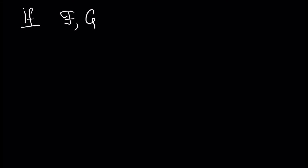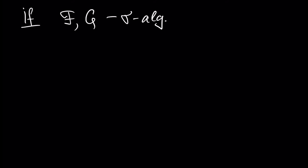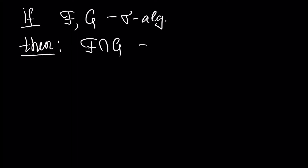We have a result. If we have two sigma algebras F and G, then the intersection of F and G is also a sigma algebra.